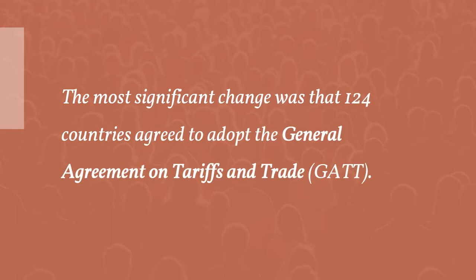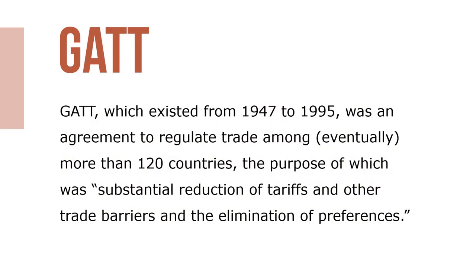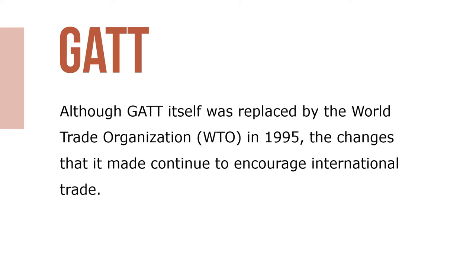The most significant change was that 124 countries agreed to adopt the General Agreement on Tariffs and Trade, known as GATT. GATT, which existed from 1947 to 1995, was an agreement to regulate trade among eventually more than 120 countries, with the purpose of substantially reducing tariffs and other trade barriers and eliminating preferences. GATT members engaged in eight rounds of trade negotiations, with the Uruguay Round signed in 1994 and going into effect in 1995.